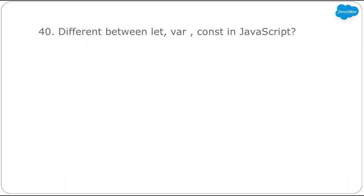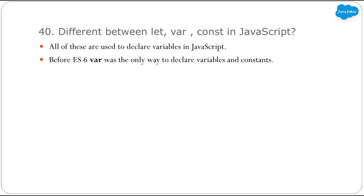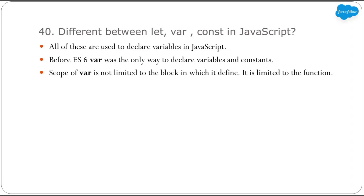Next: what is the difference between let, var, and const in JavaScript? All of these are used to declare variables in JavaScript. Before ES6, var was the only way to declare variables, but there were a few problems with var related to scope. The first problem is that the scope of var is not limited to the block in which it is defined — it is limited to the function.